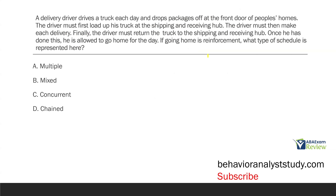A delivery driver drives a truck each day and drops packages off at the front door of people's homes. The driver must first load up his truck at the shipping and receiving hub, then make each delivery, and finally return the truck to the shipping and receiving hub. Once he has done this, he is allowed to go home for the day. If going home is reinforcement, what type of schedule is represented here? This is a straightforward compound schedule question. The driver needs to complete this chain: first load up his truck, which signals the start of the next piece — make each delivery — which signals the next piece — return the truck. Once done, he gets his reinforcement. A very simple, very straightforward chain question.